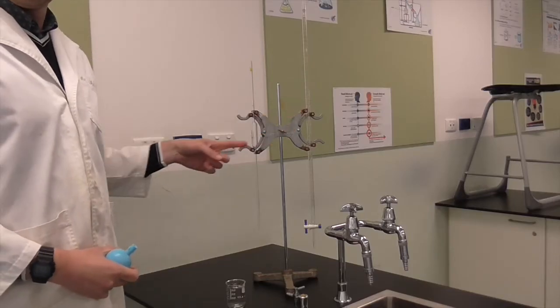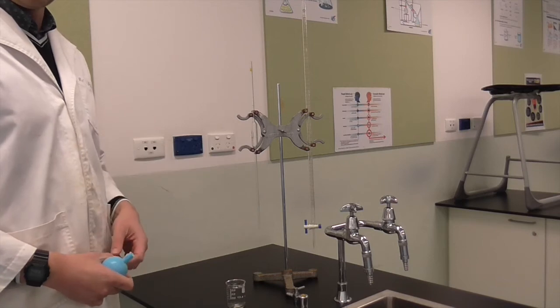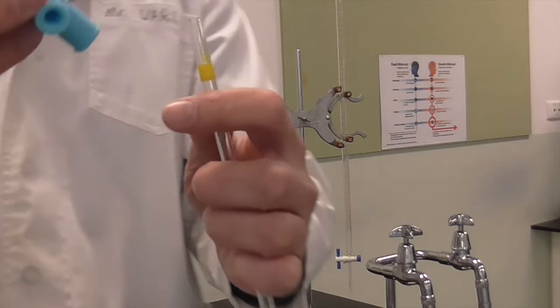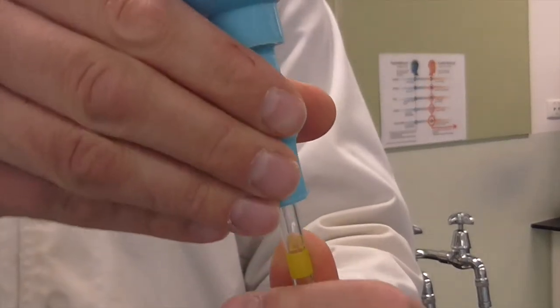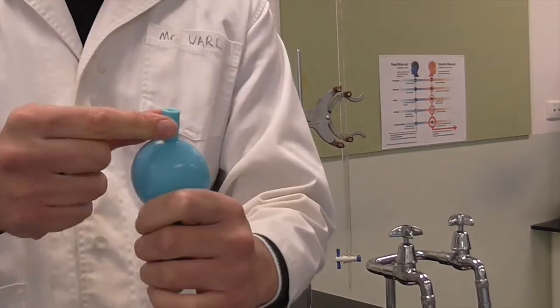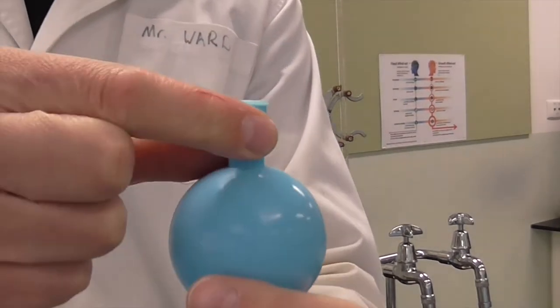We're going to go through rinsing the burette and the pipette. We're going to start with the pipette. Remove the pipette from the burette clamp. Place the pipette filler on top. Be very careful when you do this so you don't hurt yourself. Evacuate the pipette by squeezing the top valve and emptying out the bulb.